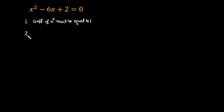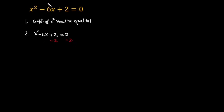Step number two: subtract the constant term from both sides of this equation. Take the equation x squared minus 6x plus 2 equals 0. The constant term is plus 2, so subtract it from both sides — minus 2 and minus 2 — so the 2s cancel and it becomes x squared minus 6x equals minus 2.